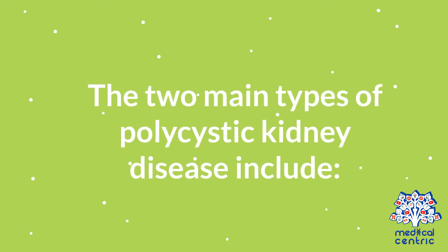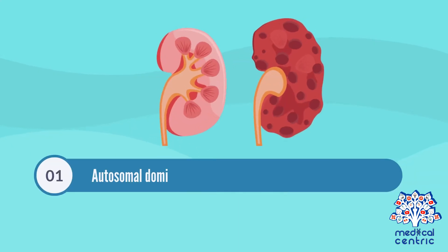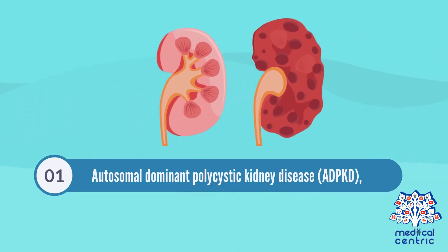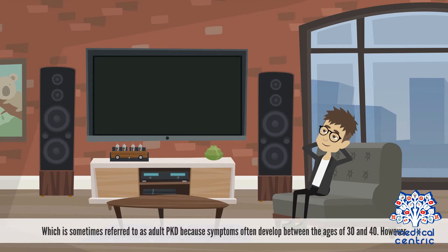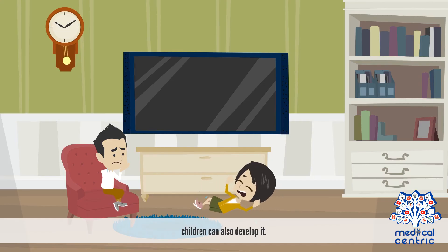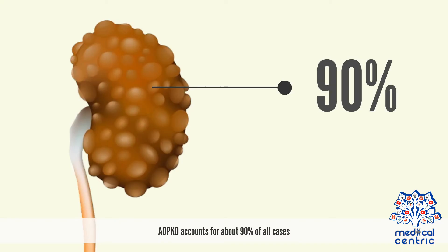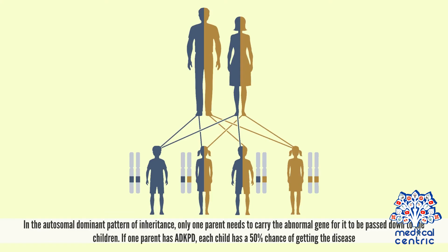The two main types of polycystic kidney disease include autosomal dominant polycystic kidney disease, or ADPKD, which is sometimes referred to as adult PKD because symptoms often develop between the ages of 30 and 40. However, children can also develop it. ADPKD accounts for about 90% of all cases. In the autosomal dominant pattern of inheritance, only one parent needs to carry the abnormal gene for it to be passed down to the children. If one parent has ADPKD, each child has a 50% chance of getting the disease.